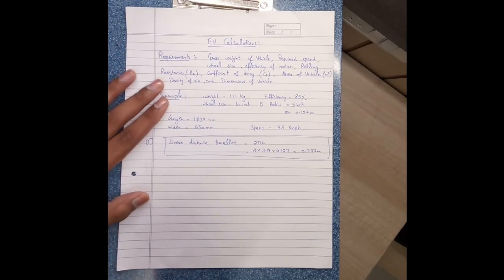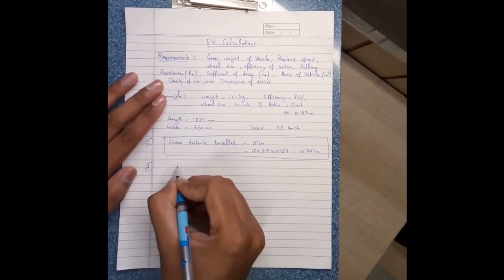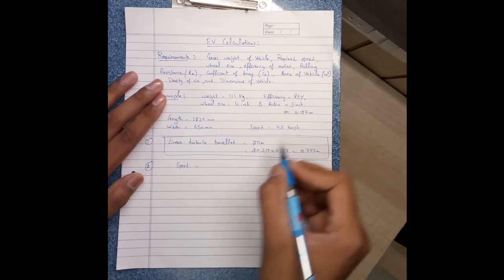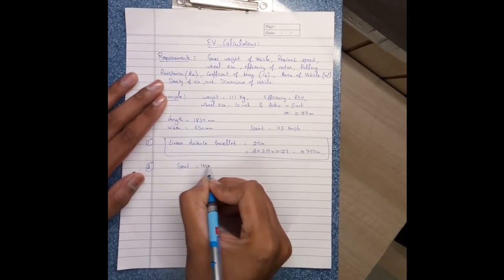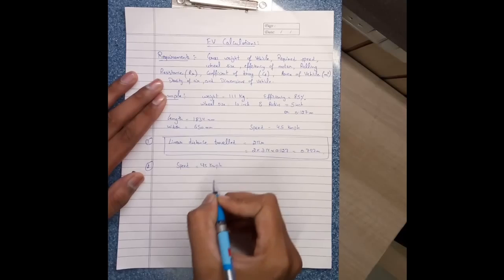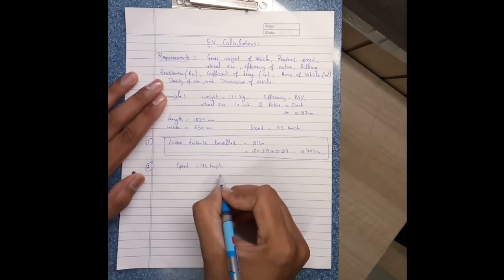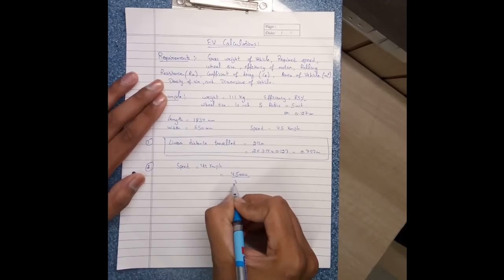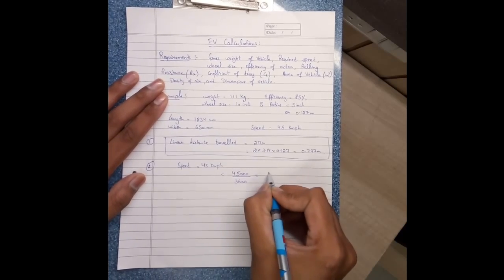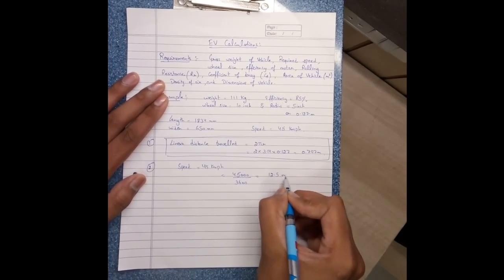Secondly, find speed in meter per second. We have speed in kilometer per hour, 45 kilometer per hour. We have to convert it into meter per second, so 45,000 divided by 3600, it comes to 12.5 meter per second.